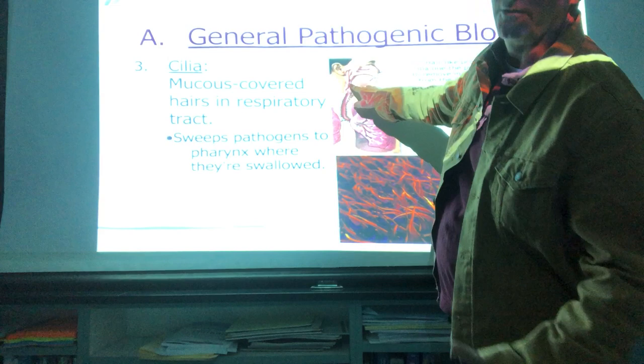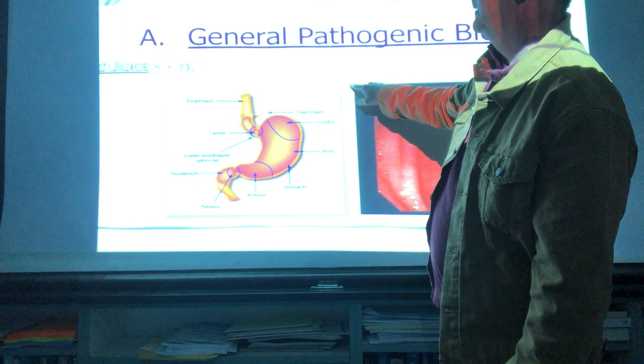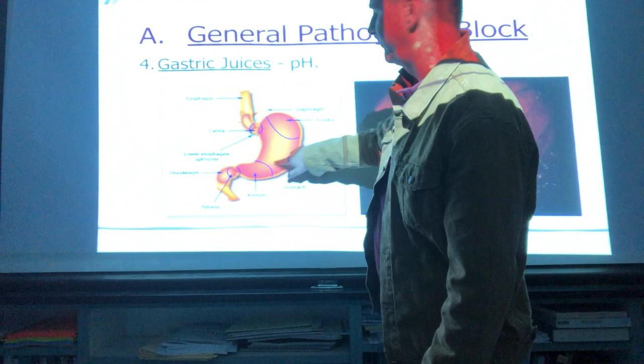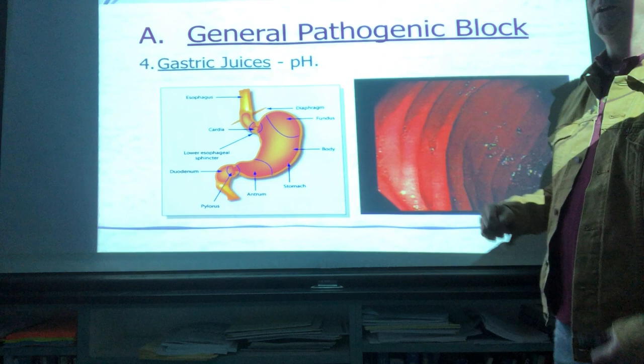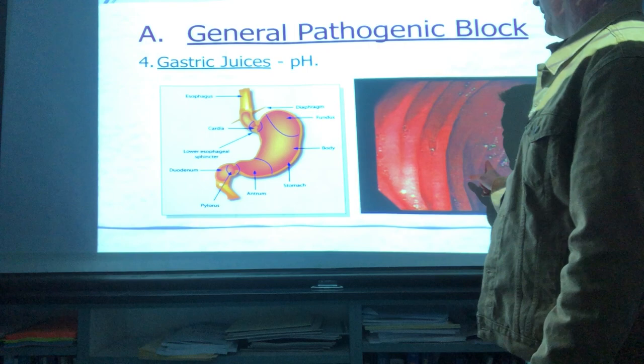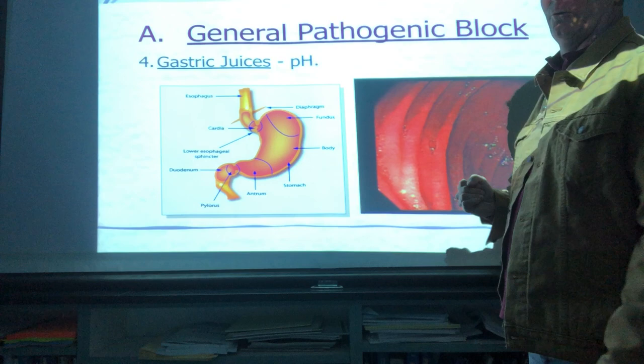Once pathogens are swept to the back of the throat, they're swallowed down to the stomach, which brings us to defense mechanism number four: gastric juices. Gastric juices are chemicals found in the stomach with a very low pH — highly acidic. That strong hydrochloric acid is effective at destroying some types of bacteria and viruses, however influenza can be strong enough to withstand that low pH.